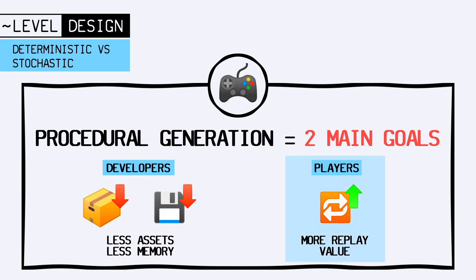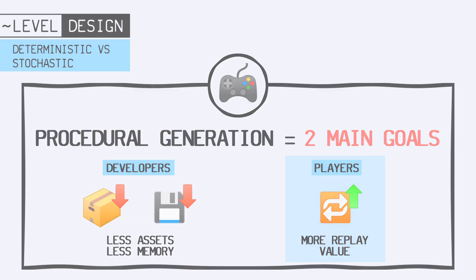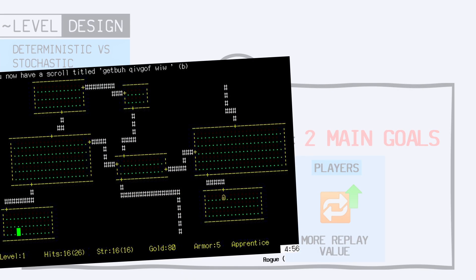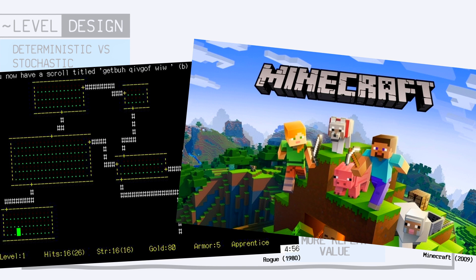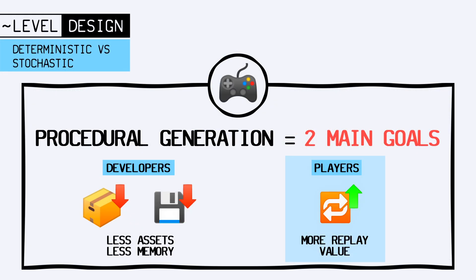While it's clear that replay value mostly comes from randomness — and that's actually why games like Rogue in 1980 or the way more recent Minecraft worked as much as they did — you'll notice that auto-making assets and reducing the memory footprint of your app doesn't inherently require randomness.